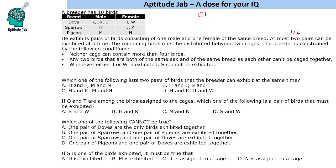The remaining birds must be distributed between two cages — cage one and cage two. The rest will be in exhibition. If there is one pair in exhibition, that means eight birds are in the cages, and if two pairs are exhibited, then six birds are in the cages.